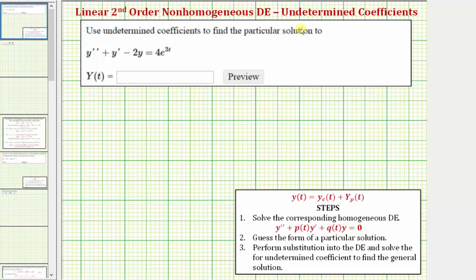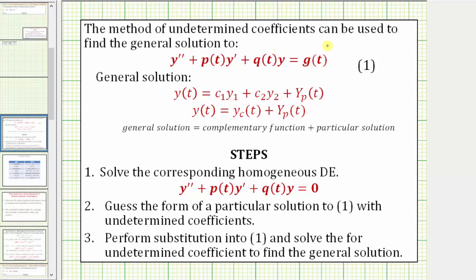Let's begin by reviewing the method of undetermined coefficients. It can be used to find the general solution to a differential equation in this form, which is a linear second order non-homogeneous differential equation. The general solution Y of t equals the complementary function y sub c of t, which equals c sub one times y sub one plus c sub two times y sub two, plus a particular solution given by big Y sub p of t.